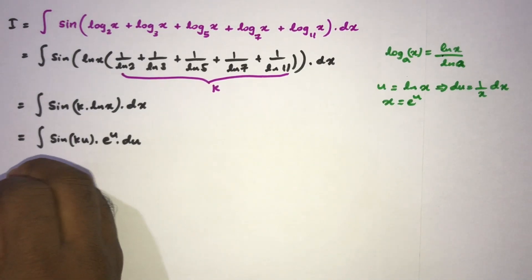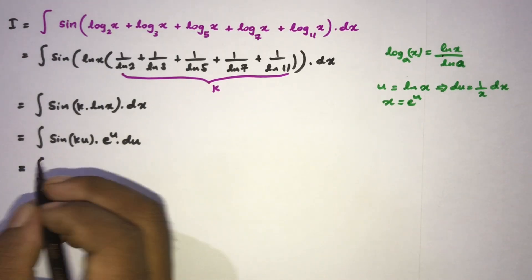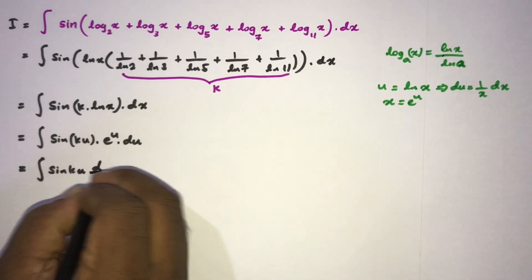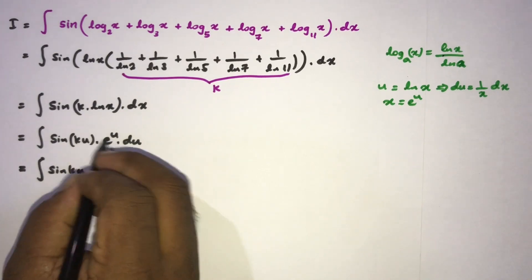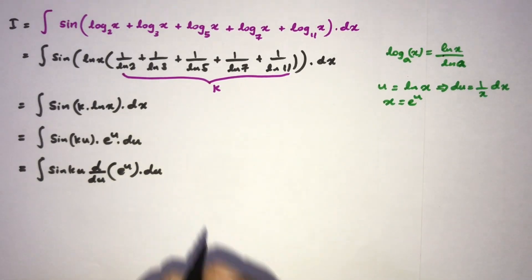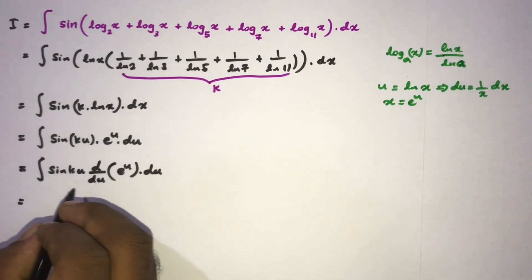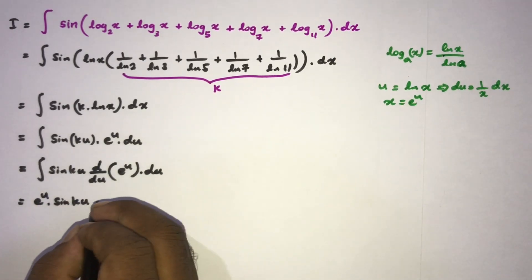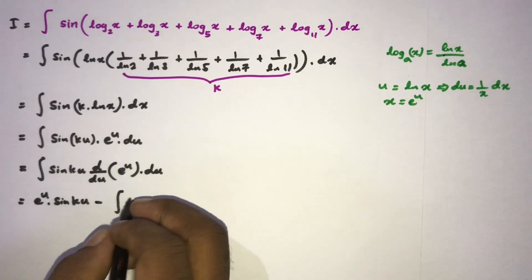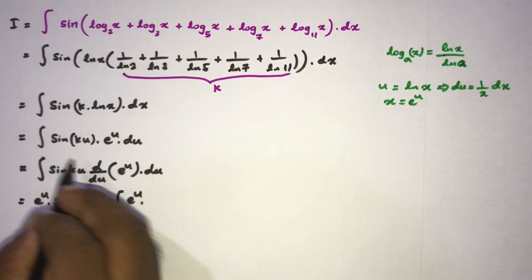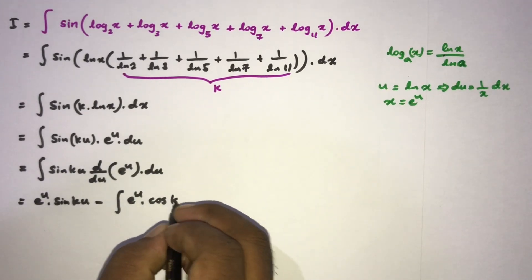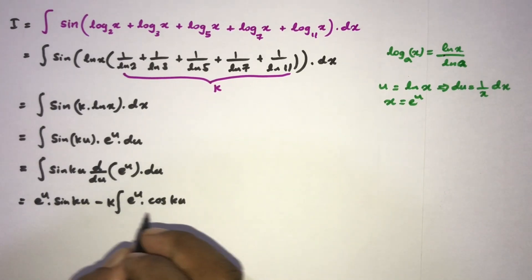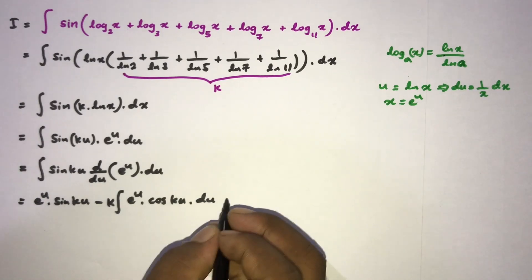For the first IBP, I take sin(ku) as the first function. Applying the IBP formula gives e to the u times sin(ku), minus the integral of e to the u times the derivative of sin(ku). The derivative of sin(ku) is k·cos(ku) by the chain rule, so we have minus k times the integral of e to the u times cos(ku) du.